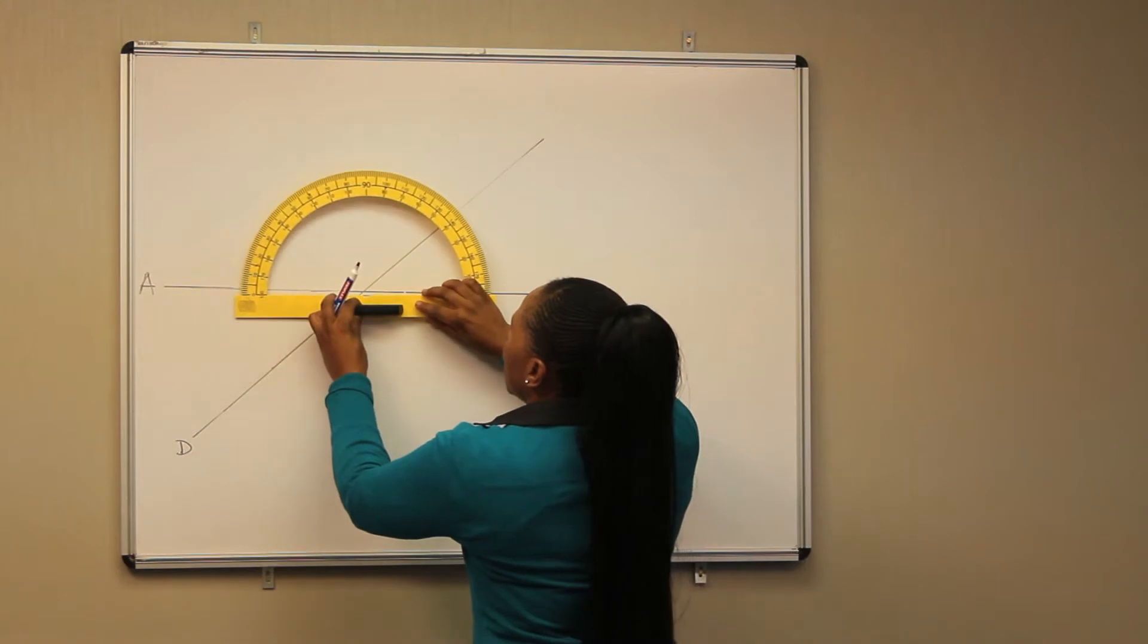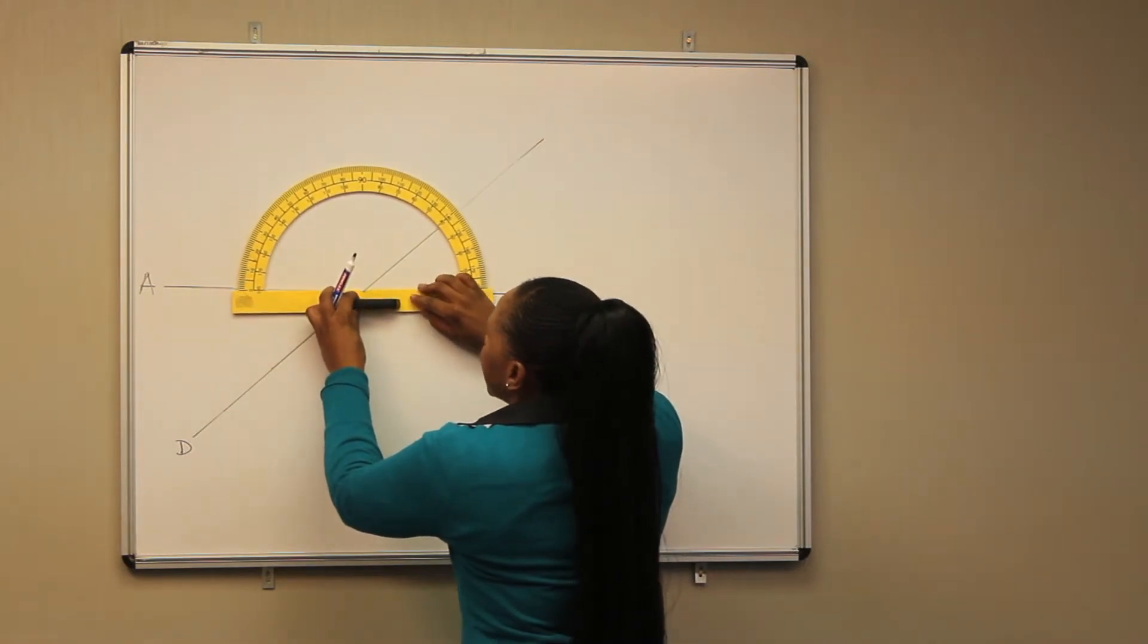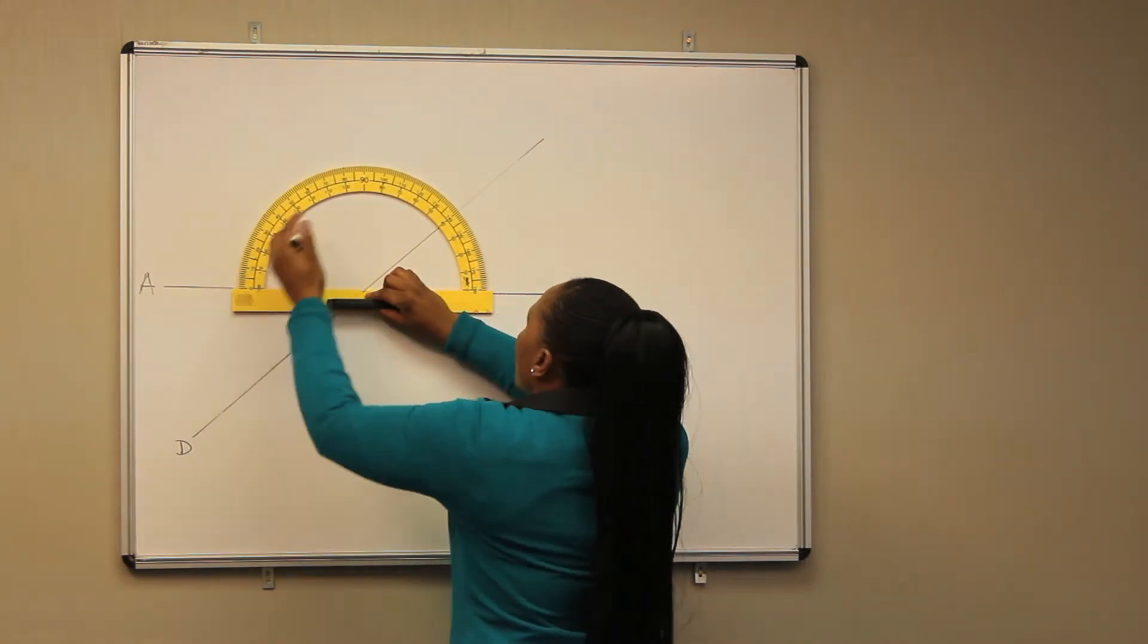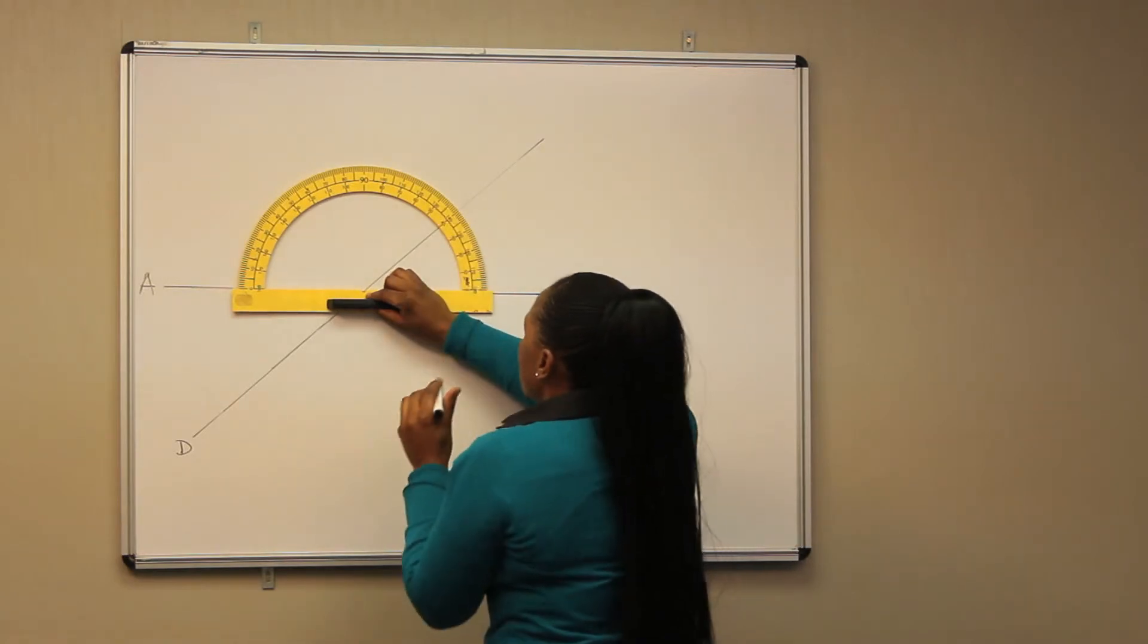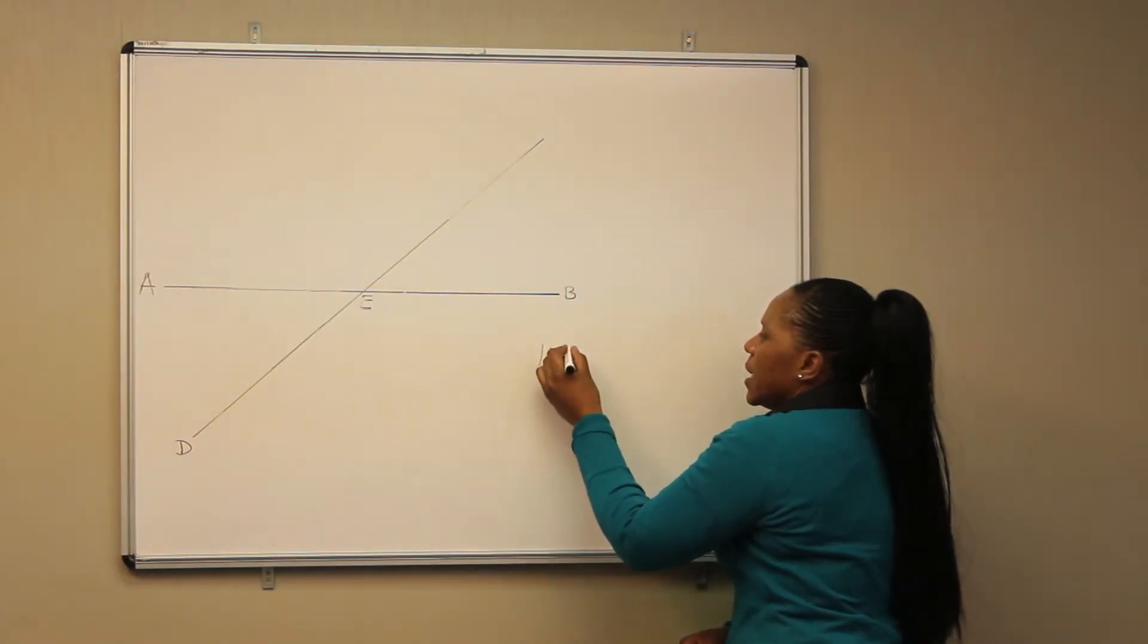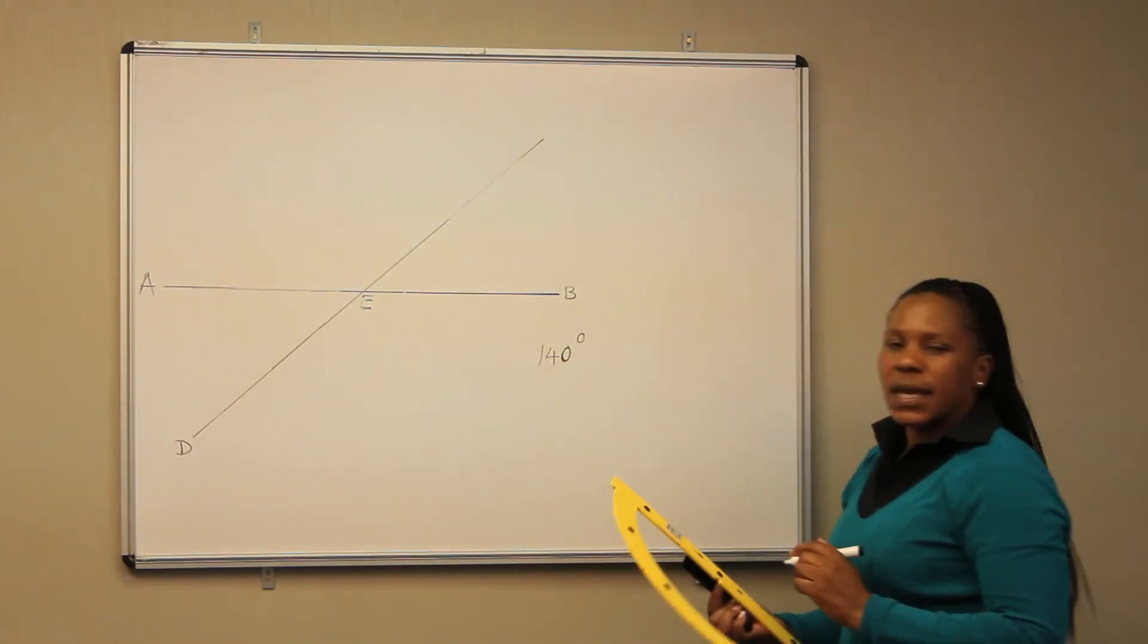So now we can measure the angle AEC. In this case, it is going to be 140 degrees. That is the size of angle AEC.